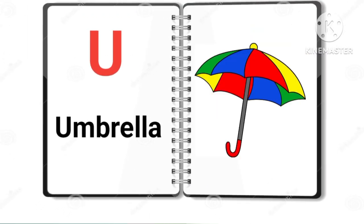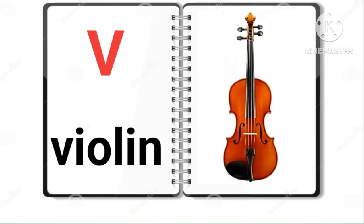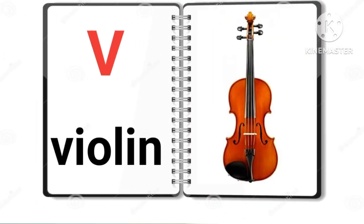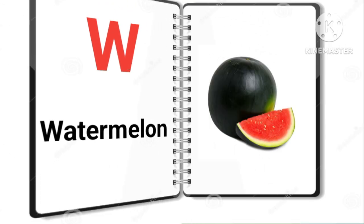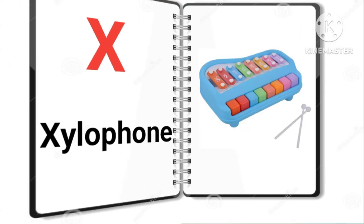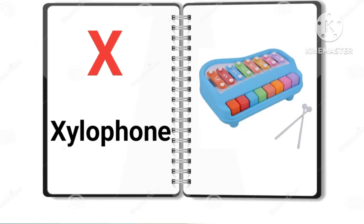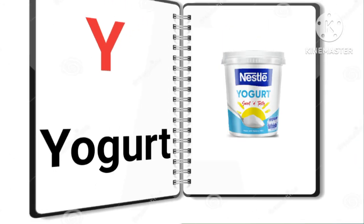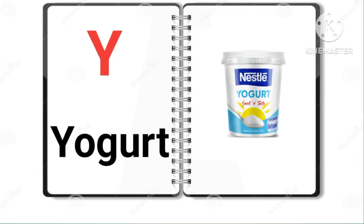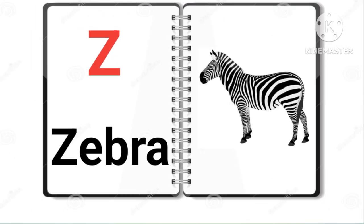U for umbrella, V for violin, W for watermelon, X for xylophone, Y for yogurt, Z for zebra.